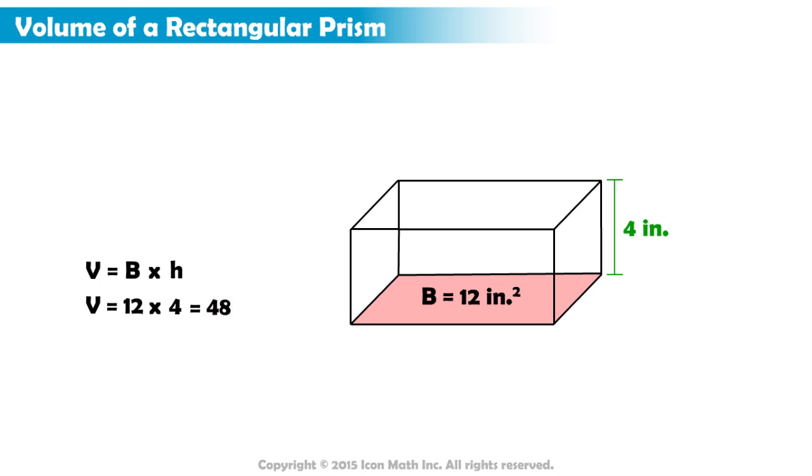But we can't forget to write the units. Height and base area use inches. Since volume describes three-dimensional space, the units are inches cubed or cubic inches. So, the volume of this rectangular prism is 48 inches cubed.